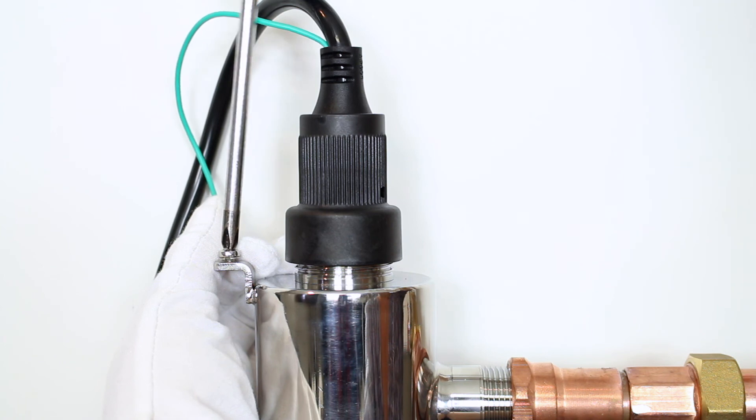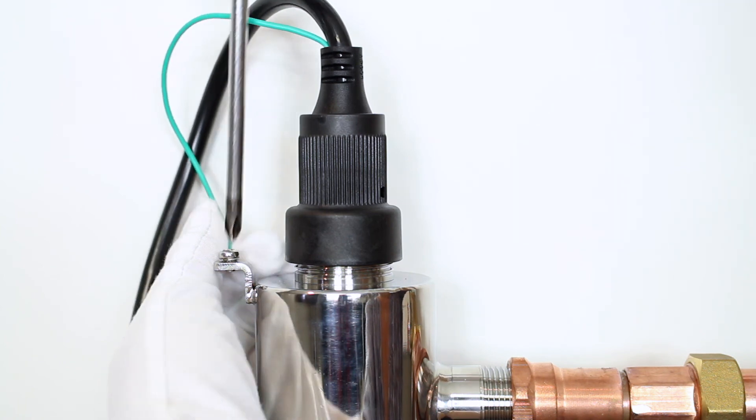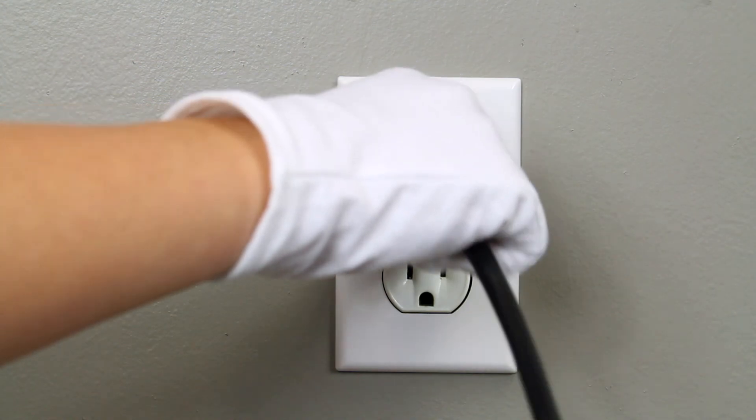Tighten the ground screw onto the ground lug on the UV reactor. Plug into your GFCI outlet.